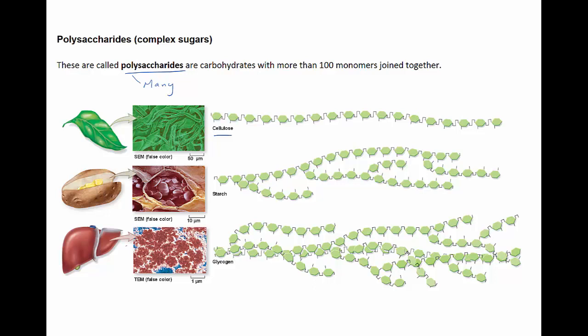Chitin also supports cells. The cell walls of fungi contain chitin, as do the flexible endoskeletons of insects, spiders and crustaceans. Chitin is the second most common polysaccharide in nature.